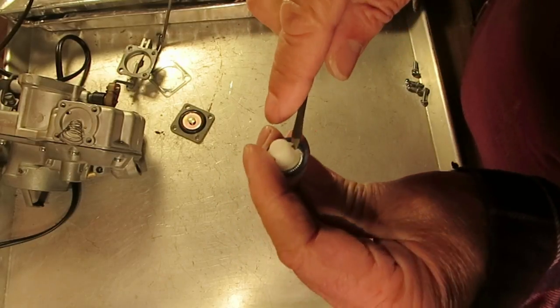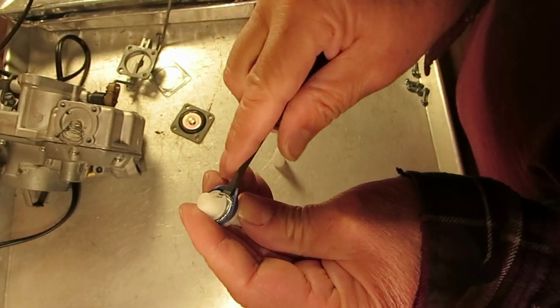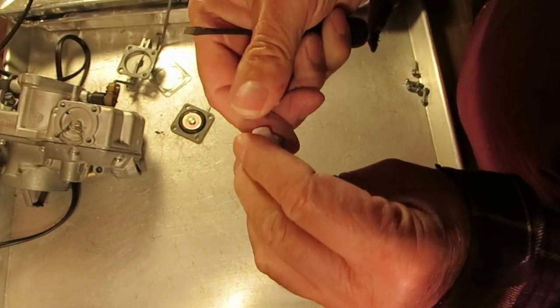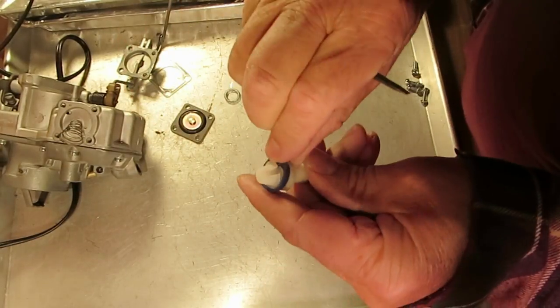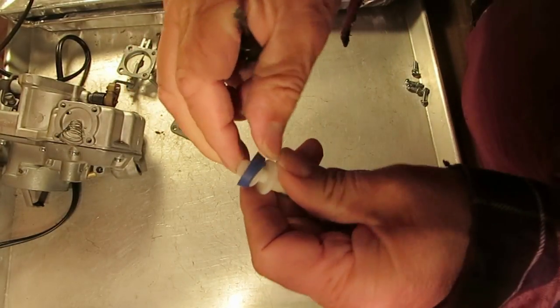Anyway, it's called a garter spring. We do carry the garter springs by themselves if you happen to lose yours. They come in the kits and there's your garter spring and then we'll pull off this cup.